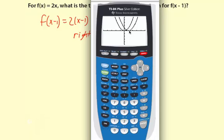And in fact, this is the pattern for all functions. If you take away 1 from the input using x minus 1 as a translation, you're going to go right 1.